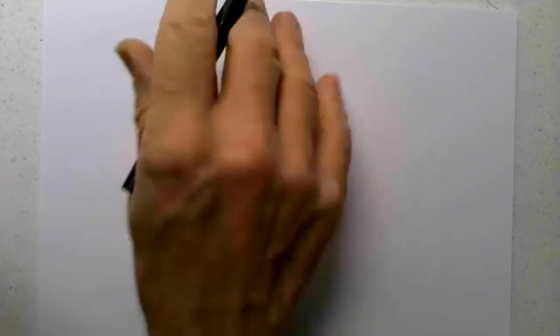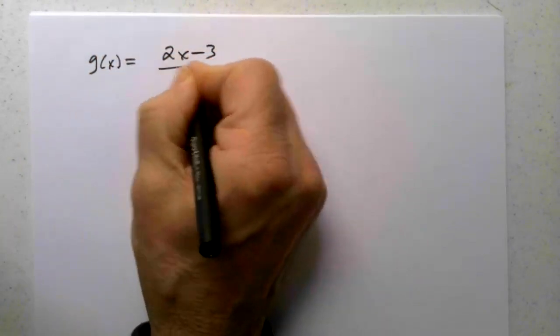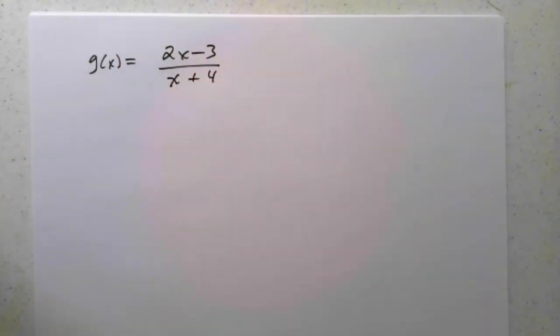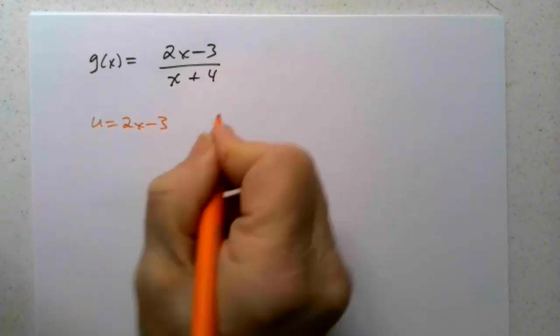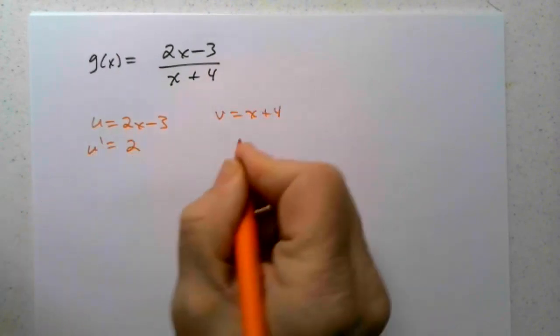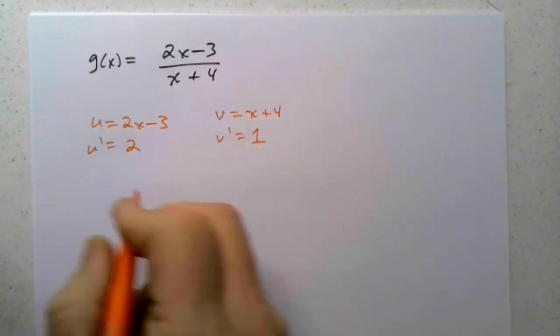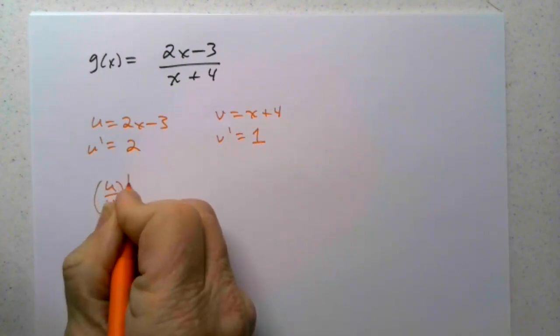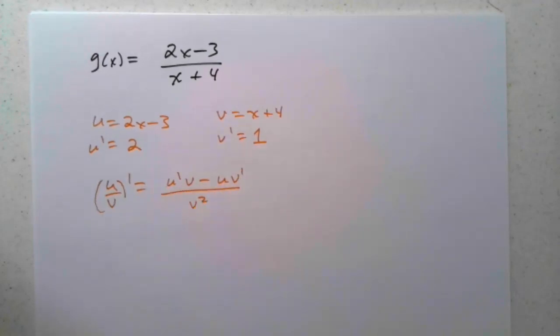Let's go with a quotient rule problem next. How about g of x equals 2x minus 3 over x plus 4? We want to take the derivative using the quotient rule. U is 2x minus 3, v is x plus 4, u prime is 2, v prime is 1. Remember, the derivative of u over v is u prime v minus u v prime, all over v squared.